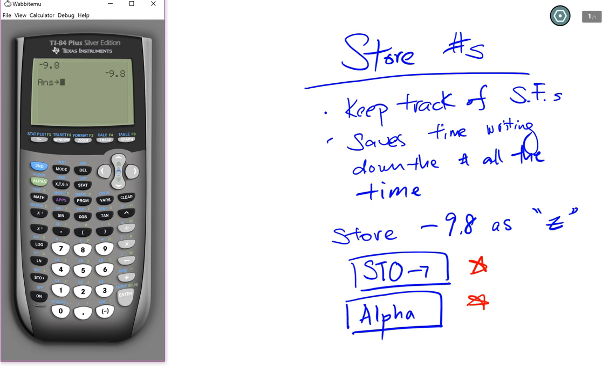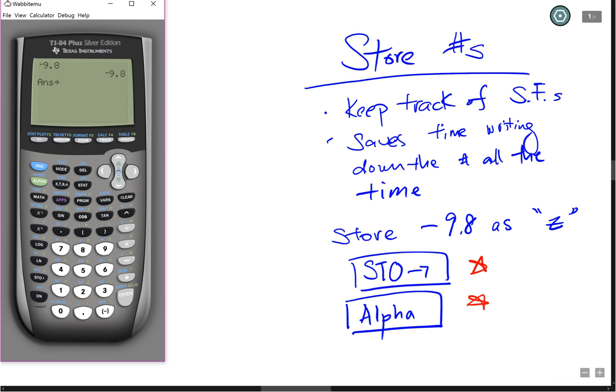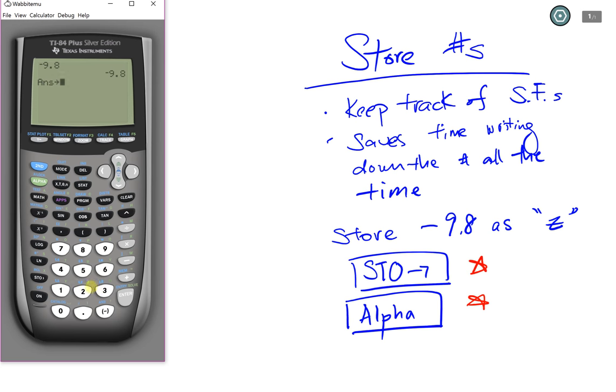On your screen, you will see answer arrow. Then I'm going to choose a letter that I'm going to store it as. On your graphing calculator, it contains letters from A all the way to Z, including theta as well.